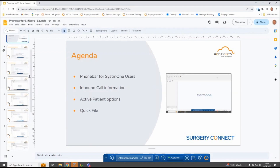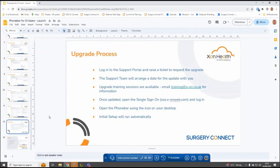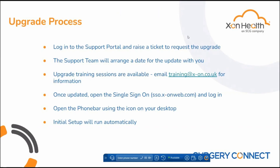I've got a slide pack here which will go through all of that information as well. Because you already have the integration downloaded, we'll need to upgrade you to the latest phone bar version — we're looking at releasing this in early October, so in the next few weeks. If you'd like to be one of the first to upgrade to the System 1 phone bar, log on to your support portal through Surgery Connect and raise a ticket with the service desk to request the upgrade.